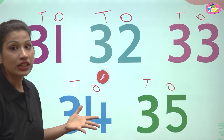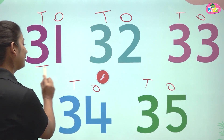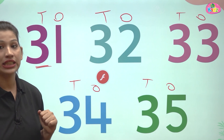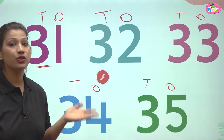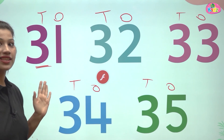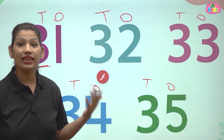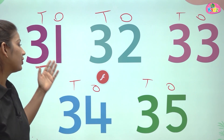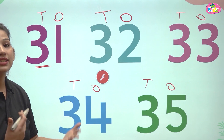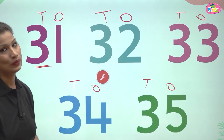In all of these numbers, at the tens position you can see the number 3, because this is the series of 30. From 31 to 35, at the tens place all of the numbers are 3. All of the numbers are increasing at the ones place — it's 1, 2, 3, 4, and 5 — because it is forward counting.